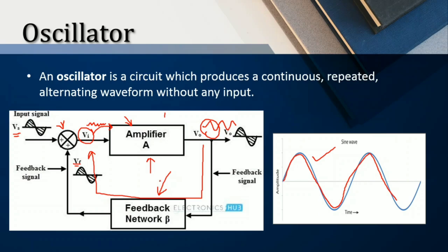This is an amplifier with amplification factor A, and this is a feedback network with the feedback factor beta. We call the amplification factor A and the feedback factor beta. This is the definition of an oscillator.